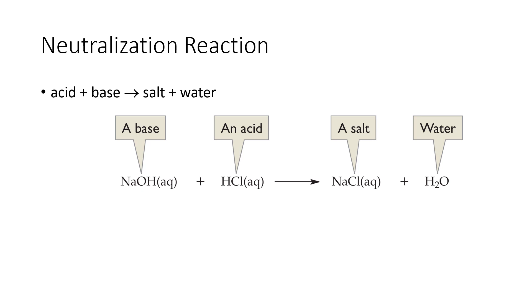It is really important that you always write the positive part of the compound first. To illustrate this, let's look at the charges: sodium is in group one so it has a +1 charge; hydroxide is a polyatomic ion with a -1 charge; hydrogen ion is also +1; chlorine is in group 17 so it's -1. Water is written as H-OH to illustrate that part of the water molecule came from an H⁺ ion and part came from an OH⁻ ion.